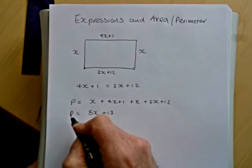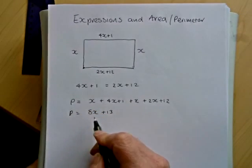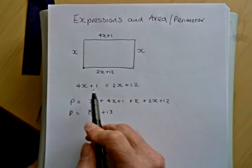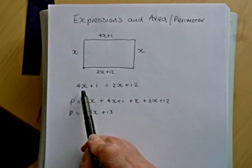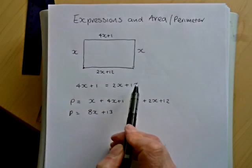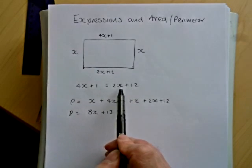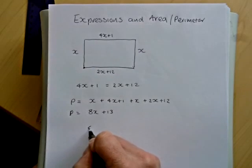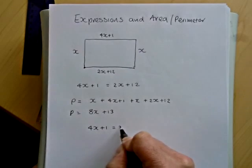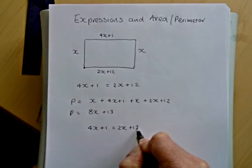We could get the exact value of the perimeter if we knew the value of x. And we can find the value of x because we have an equation here that connects 4x plus 1 to 2x plus 12. I'll write that down here and we will work with that.